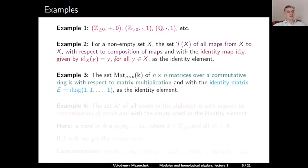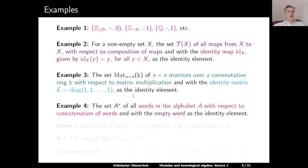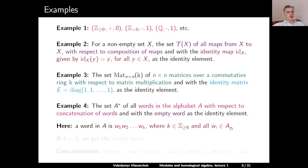Example three: the set of all n×n matrices over a commutative ring K is a monoid with respect to matrix multiplication, where the identity element is the identity matrix — a diagonal matrix with 1s on the diagonal and 0s everywhere else. Example four: the set A* of all words in the alphabet A with respect to concatenation of words. Here we also include the empty word, which becomes the identity element with respect to concatenation. A word in A is a string of letters w₁, w₂, ..., w_k where all w_i are in A, and if k = 0 we get the empty word.